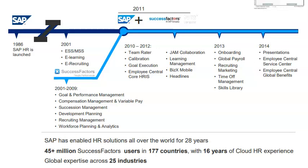SAP acquired SuccessFactors and merged it completely in 2011. From 2010 to 2012, team rater, calibration, goal execution, and Employee Central core HR were introduced. Then JAM collaboration, learning management, BIS mobile, and headlines were also launched.